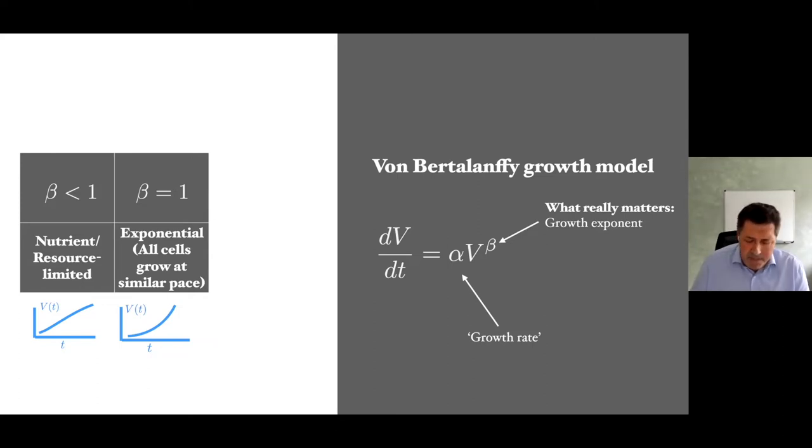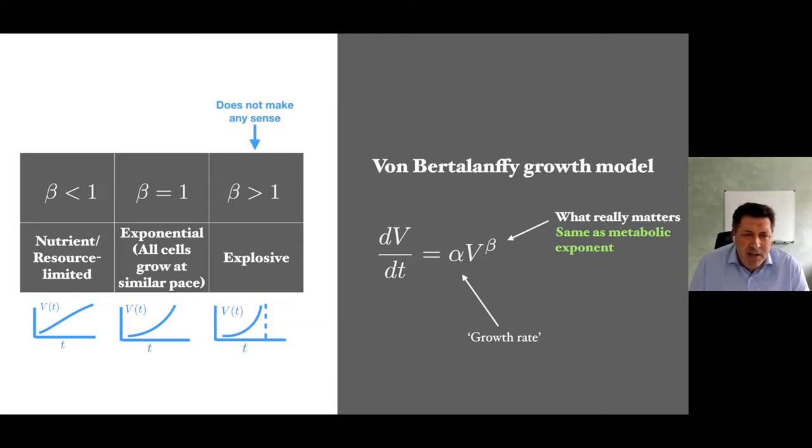Of course, there's another possibility that doesn't make any sense: beta larger than 1. If you solve this equation with beta larger than 1, you get explosive growth, a finite singularity in finite time. That doesn't look biologically feasible initially.